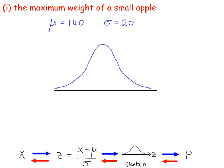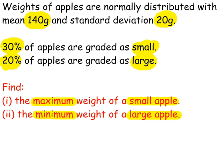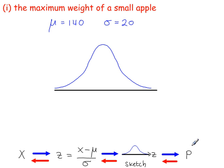Let's start with the first one. What you're doing here is following this flowchart. You're given probabilities. We know that 30% are small and 20% are large. So from the given probabilities, we need to do the sketch and work out the Z values.